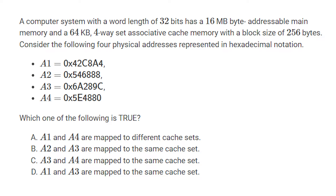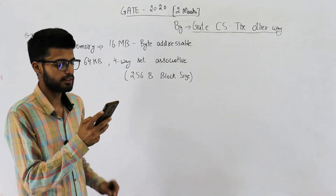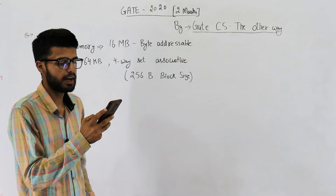Consider the following four physical addresses represented in hexadecimal notation. Just have a look at these addresses. The question asks which of the following is true — option A says A1 and A3 are mapped in the same set, and there are four options total. We need to find out which address is mapped onto which cache set.